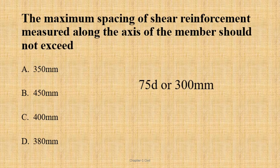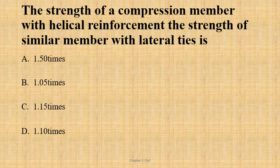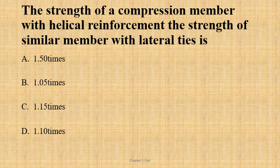The first RCC question is the maximum spacing of shear reinforcement, answer is 300 mm or 0.75d. The strength of a compression member with helical reinforcement versus a similar member with lateral ties: we use 5% more strength for helical reinforcement. The answer is 1.05 times.